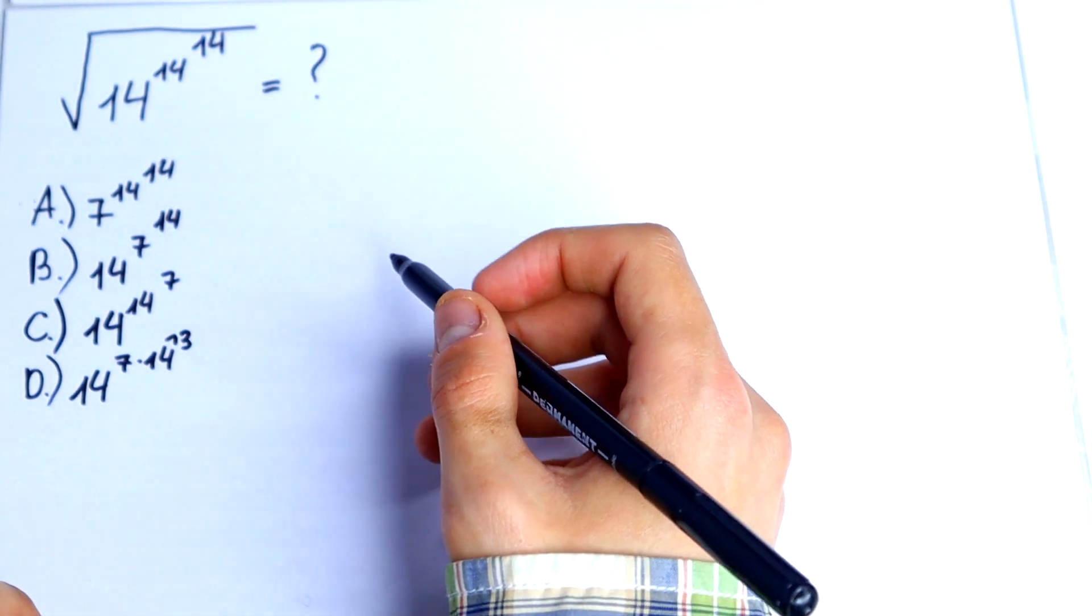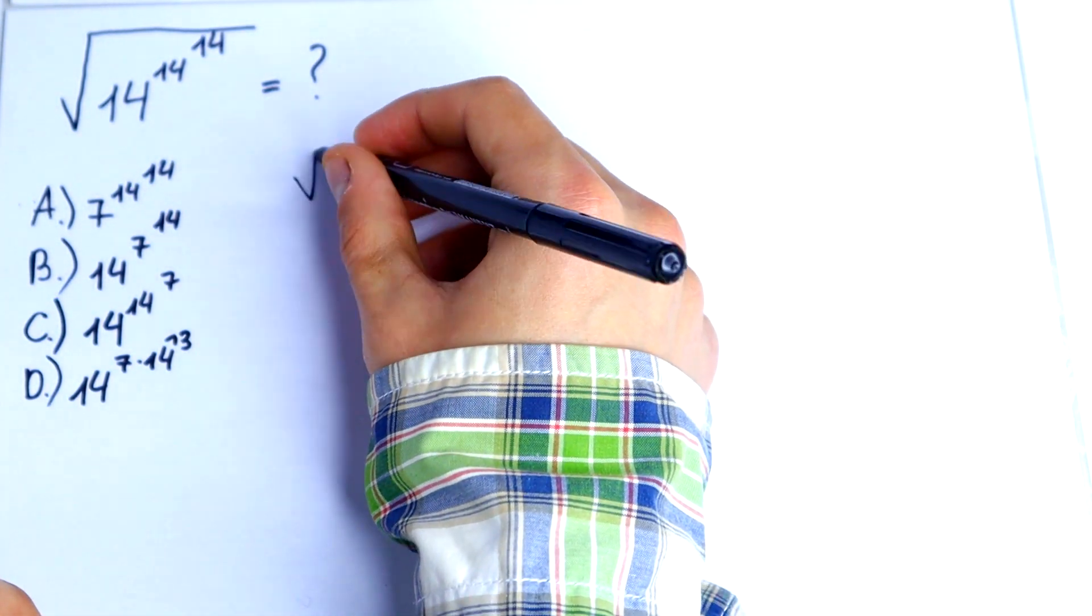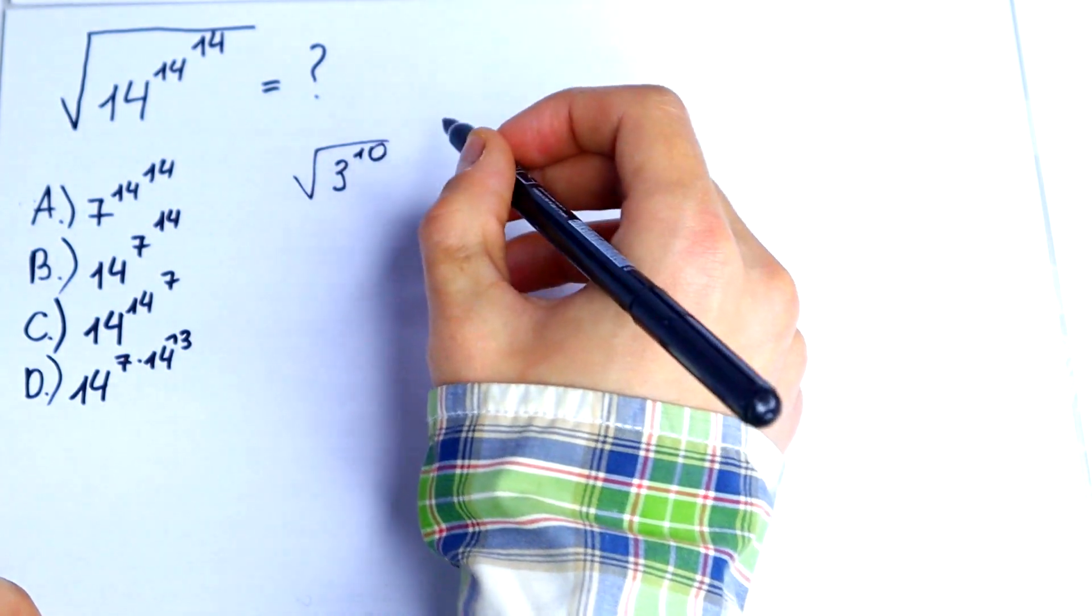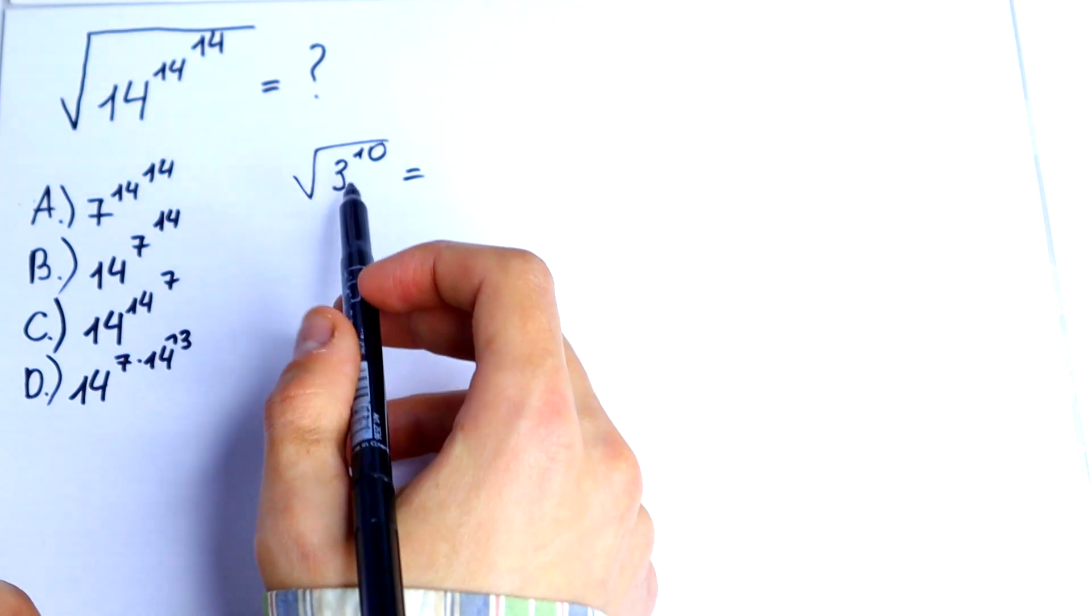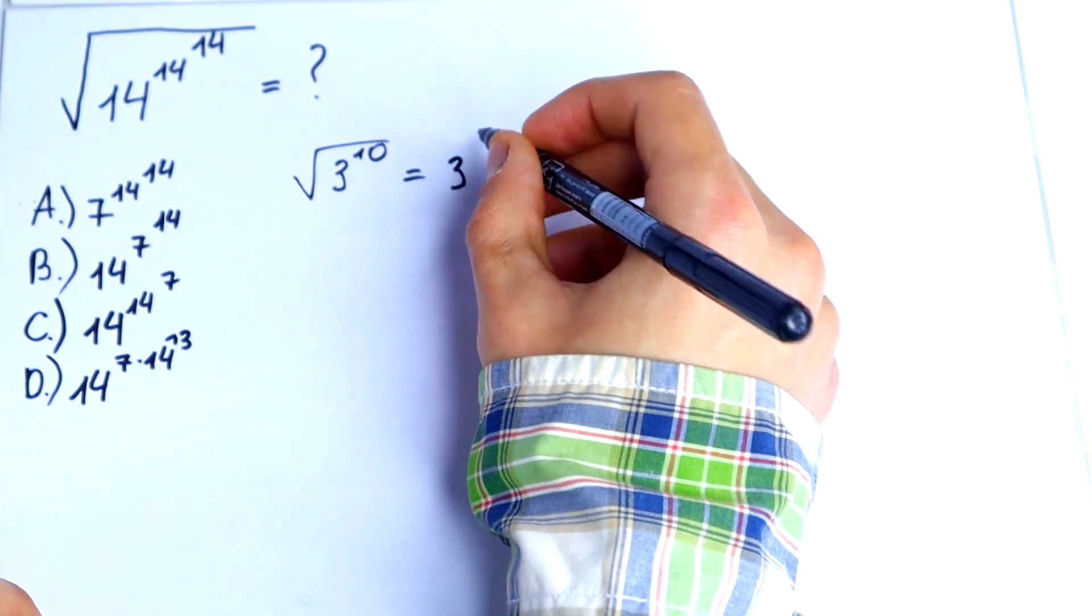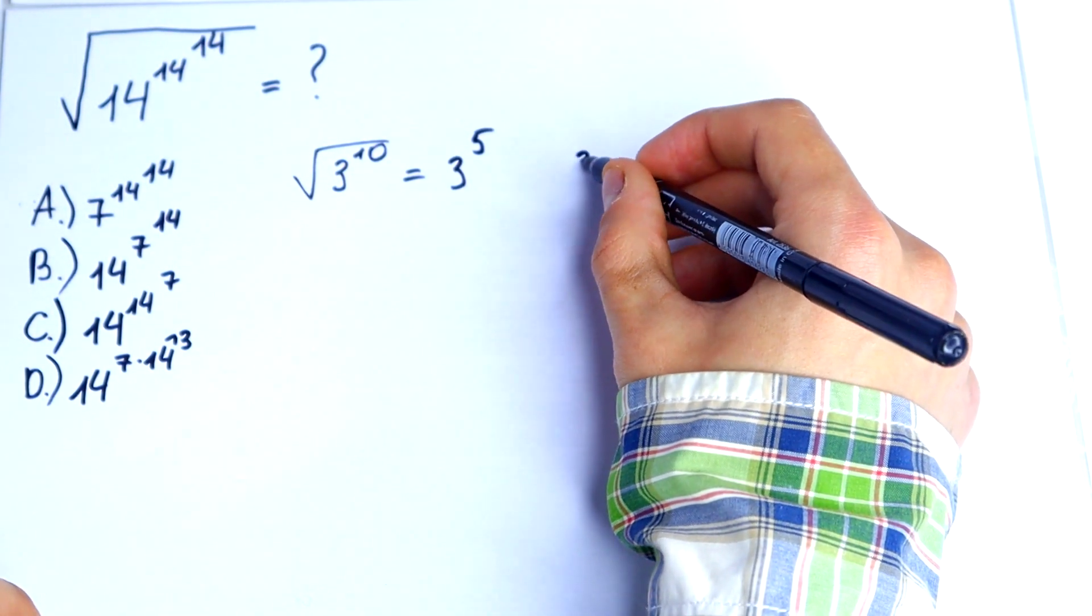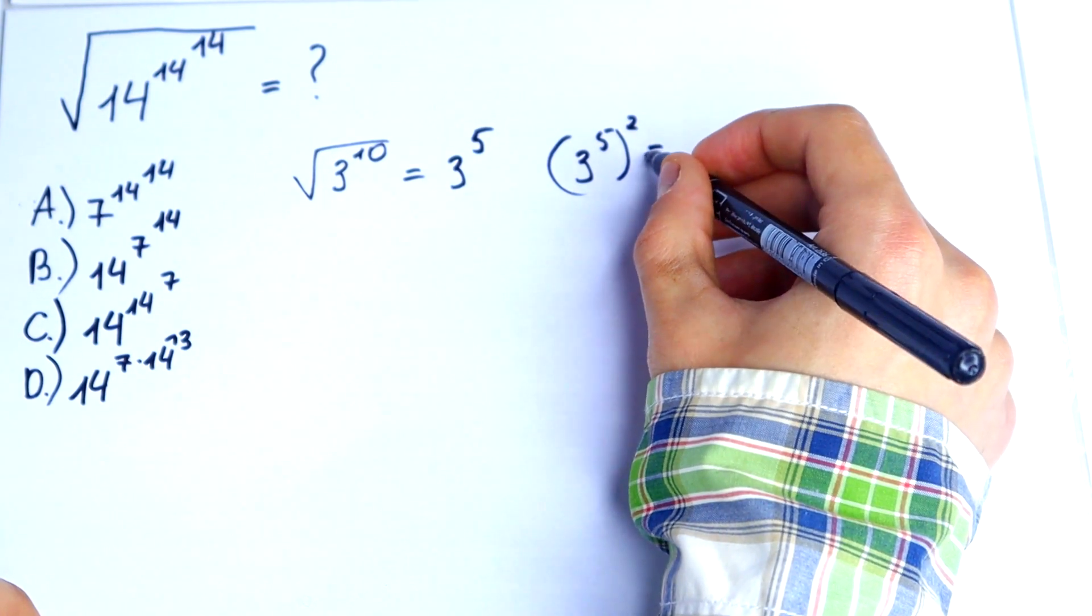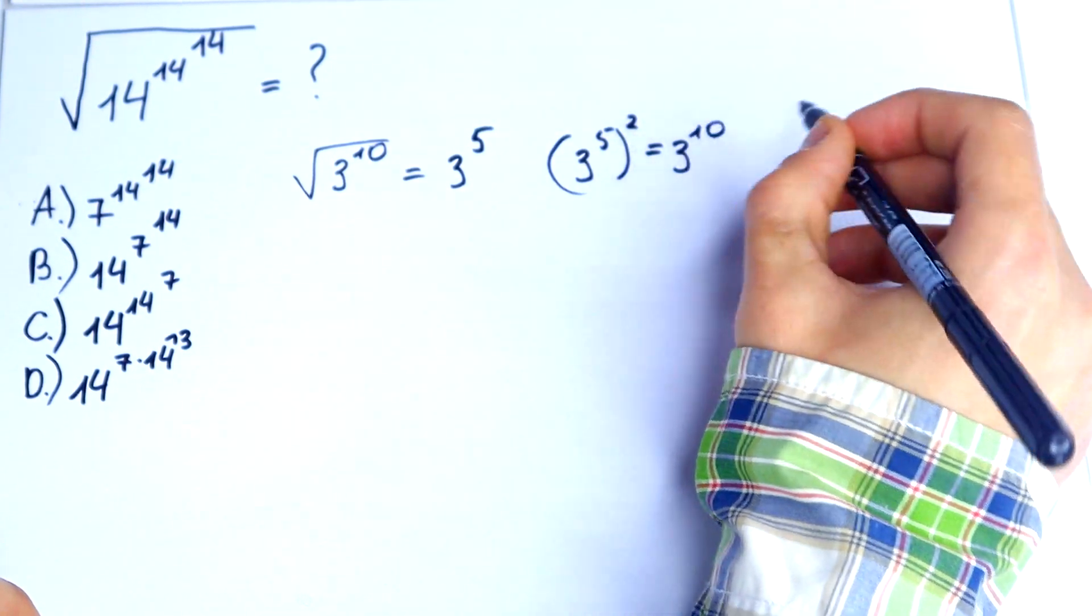How can we solve it? Let's write, for example, the square root of 3 to the 10th power. What would this equal? It would be equal to 3 to the 5th power, because 3 to the 5th power squared would equal 3 to the 10th power.